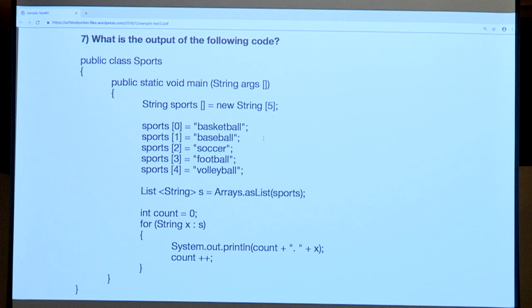Question seven is an output question — another code tracing question. We'll trace through it first. Always start with main. We have a class sports. The first thing is creating an array called lowercase sports of type string. On the right-hand side: equals new String with five in the brackets, meaning we're creating five slots that can store strings — the number in the brackets is the length of the array.